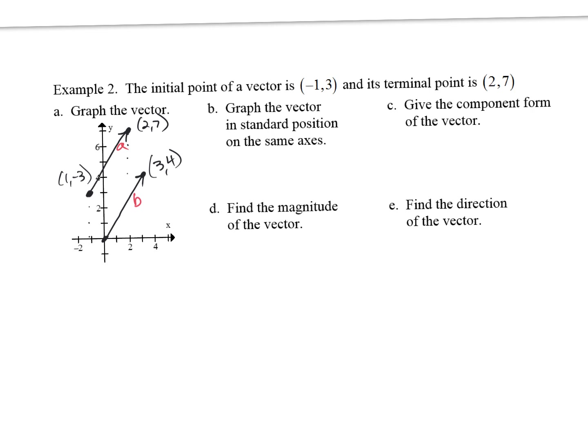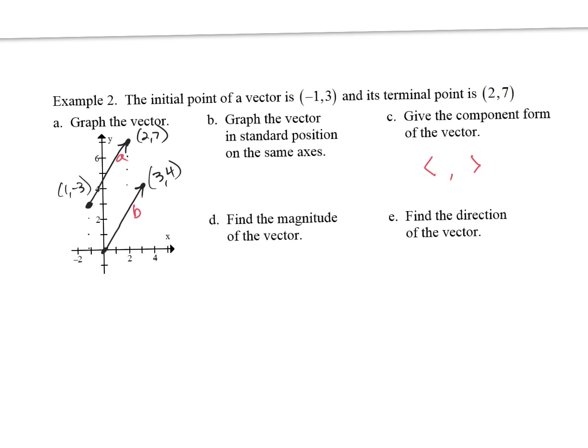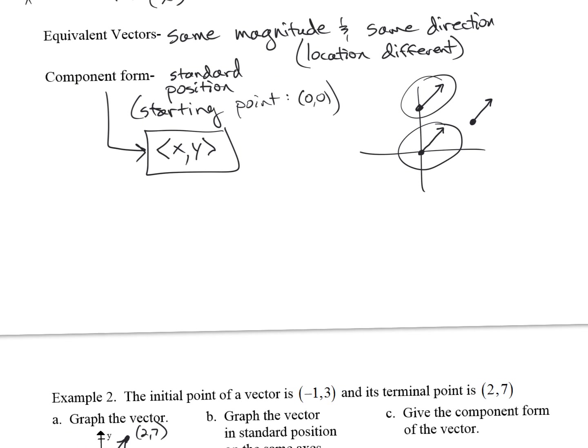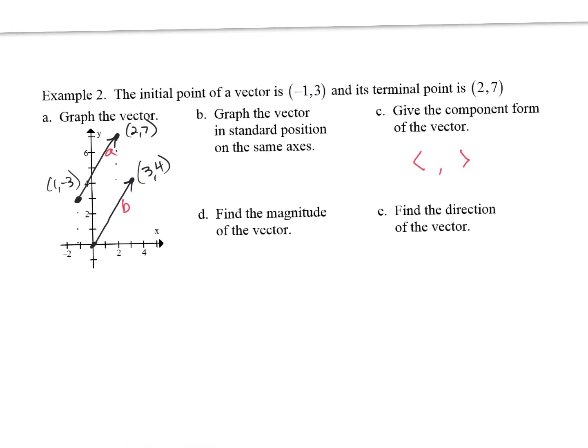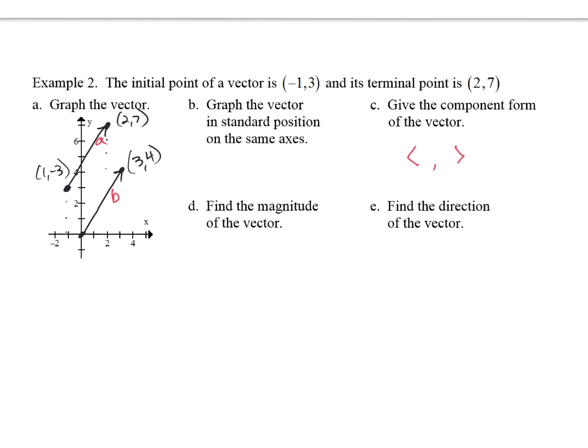Part C says give the component form of the vector. What should I write? Those chevron brackets, and what goes inside? In standard position the initial is at (0,0), so the x,y represents the other point — the ending point, which is (3, 4). So you put it in there with chevrons instead of parentheses.